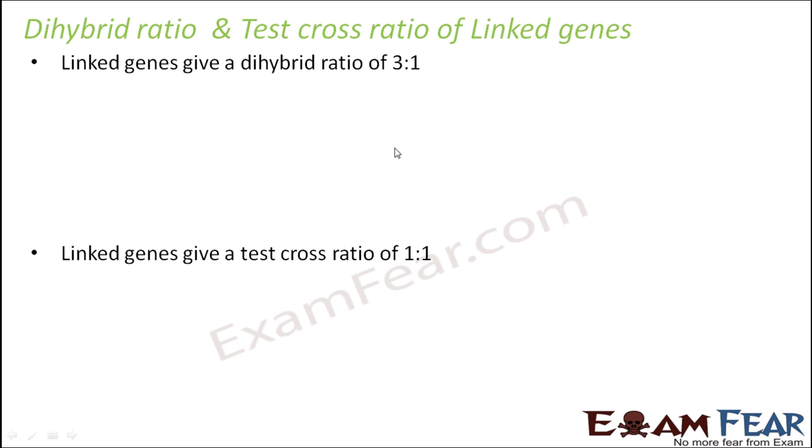Let us try to find out how the linked genes give a dihybrid ratio of 3 is to 1. For that purpose, let us consider that we have a chromosome here where we have two genes A and B and this represents the homologous pair of chromosome with the counterparts of the gene. So we say that A and B are linked and A and B are again linked.